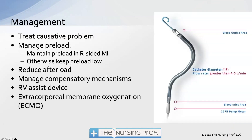Management focuses on treating the causative problem — whether pulmonary hypertension or pulmonary embolism. We also want to manage preload. In a right-sided MI, we typically keep the patient on the higher side of preload, whereas in right-sided failure we want to keep preload low. We don't want the patient to be overly dry, but the more fluid we give, the more it will overwhelm the right side of the heart.